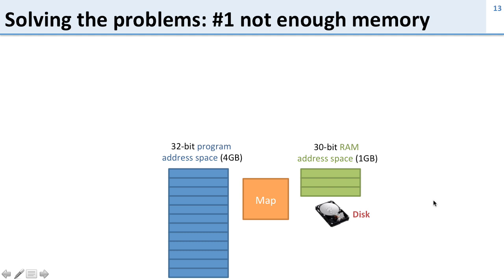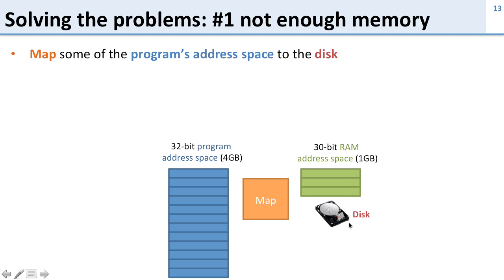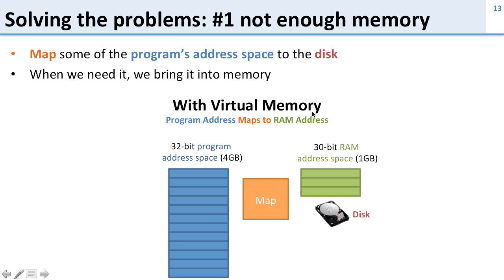Let's take a look at how virtual memory solves these three problems. Here's our same 32-bit address program space and our same 1 gigabyte 30-bit RAM address space. We have 1 gigabyte of memory installed and MIPS promises 4 gigabytes of memory space to every program. Now we've got this map in the middle, and we've got a disk over here where we can put stuff that doesn't fit. We're going to map some of the program's address space to disk when it doesn't fit, and when we need it, we'll bring it into memory. The program goes and tries to load address 0, goes to the map, and the map says address 0 is over here — no problem, you can access it.